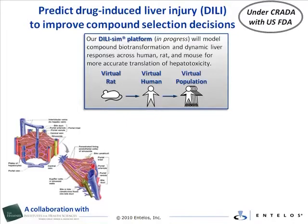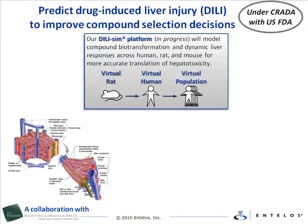The DILI-SIM platform will provide a means for more accurate translation of preclinical liver signals to patient risk. Because liver dynamics from mouse, rat, and human are each quantitatively characterized in the model, simulations based on preclinical assays — such as in vitro liver microsomes or cultured hepatocytes, or in vivo mice or rats — can then be used to predict hepatotoxic responses in human patients.